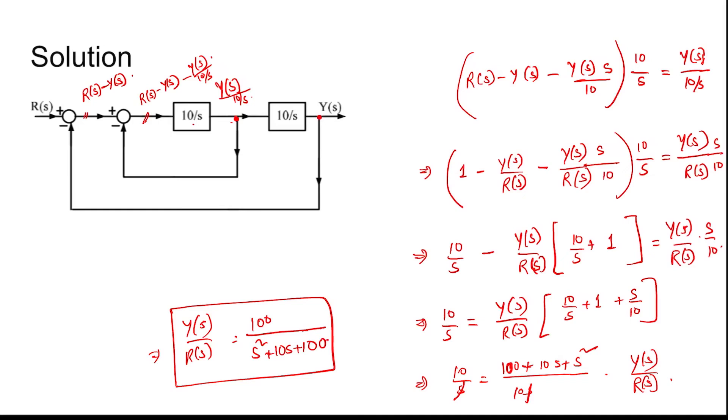From comparing with the standard form, omega n square divided by s square plus 2 zeta omega n s plus omega n square, we find omega n as root over 100 equal to 10, and zeta equal to coefficient of s divided by 2 omega n. Coefficient of s is 10 divided by 2 into 10, which is equal to 0.5.